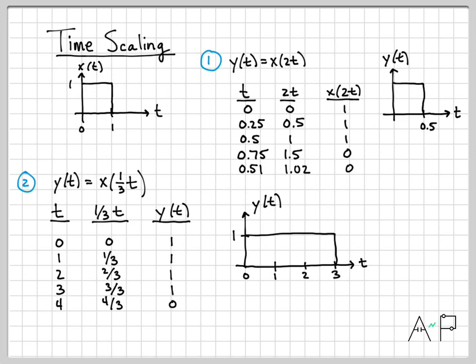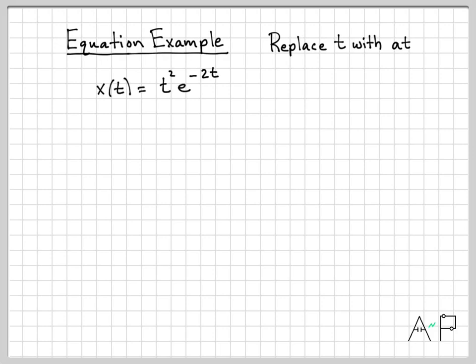So that's how I like to do things when I have a graphical plot of a function and I'm performing time scaling on that function. Sometimes though you just have the math so to speak. So let's look at an equation example here. The rule is pretty simple: anytime we do time scaling we replace the original time value with at. Let's do a specific example of that. Let's say I'm starting off with x(t) = t²e^(-2t) and I want to create the new function y(t) which is x(2t). So we've done time scaling with a equals 2.